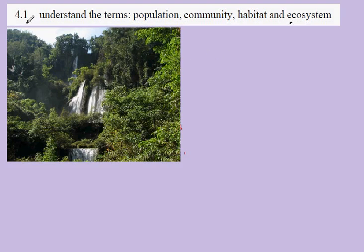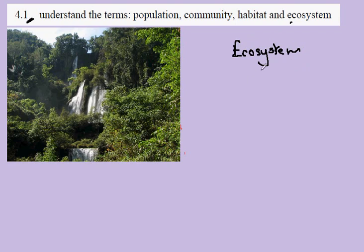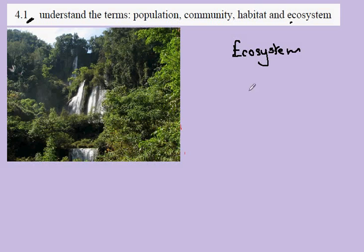GCSE Biology, Section 4.1: Terms Used to Describe Ecosystems. The ecosystem is a term that we hear very widely in the media, but as biology students you are required to have a more precise understanding of this term. On the left hand side we have an ecosystem — an image of a forest with waterfalls and the growth of the trees and so forth.